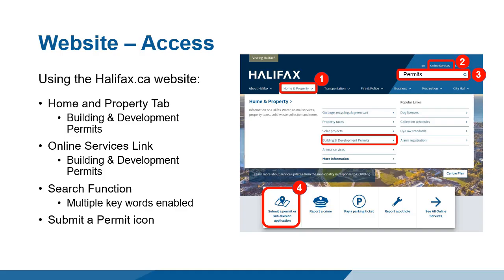Building and development permit pages can be accessed in four ways from Halifax.ca: 1. Using the Home and Property pull-down menu and selecting Building and Development Permits from the list. 2. Clicking Online Services and then selecting the Building and Development Permits tile. 3. Searching by keyword — many keywords have been added. 4. Clicking the Submit a Permit or Subdivision Application icon. All options will lead to the Building and Development Permits page.